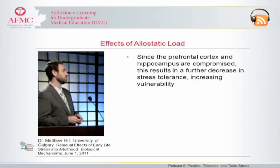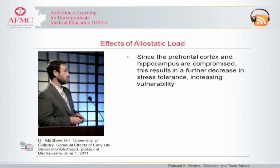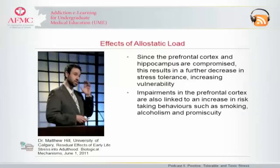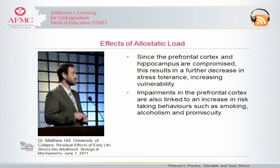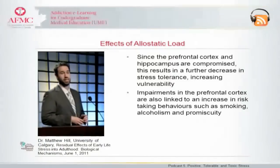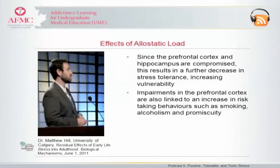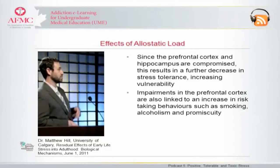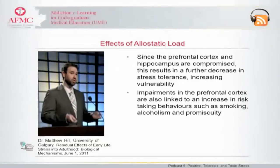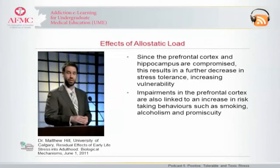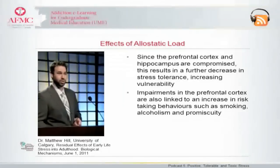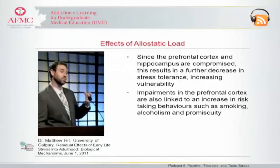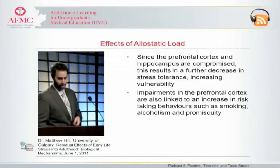The other thing that comes out of the prefrontal cortical volume changes is the idea that if this structure isn't working properly, this may account, at least in part, for the reason why you see the emergence of increased levels of risk-taking behaviors, impulsivity, things like smoking, alcoholism, and promiscuity, which have all been documented in individuals who underwent early life stress. The fact that the prefrontal cortex might not be working as well seems to be a major player in this.